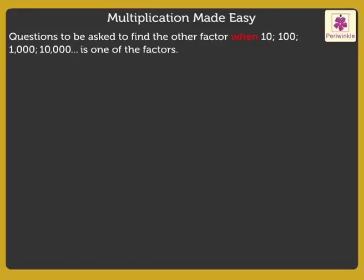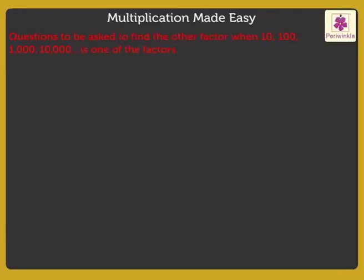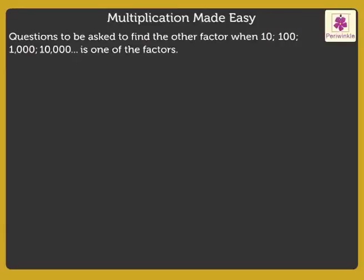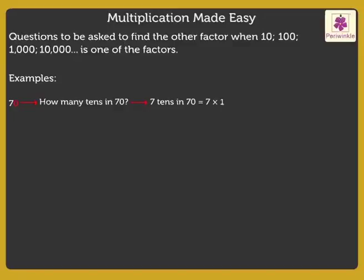Kids, when ten, one-hundred, one-thousand, ten-thousand, and so on is one of the factors, we must ask the following questions to find the other factor. Look at the number seventy. There is one zero in seventy, so we know that one of the factors is ten. To find the other factor, ask the question: how many tens in seventy? There are seven tens in seventy, which is equal to seven into ten. Therefore, the other factor is seven.